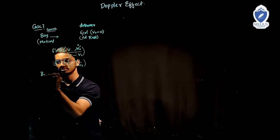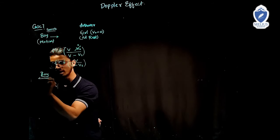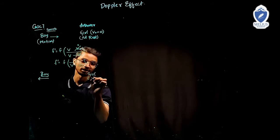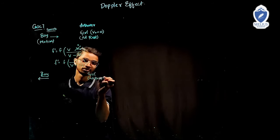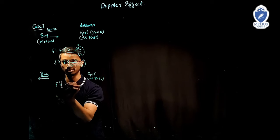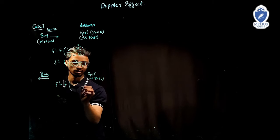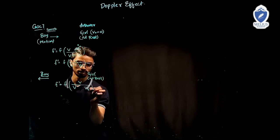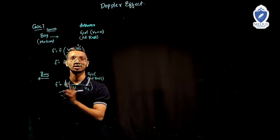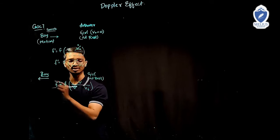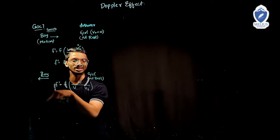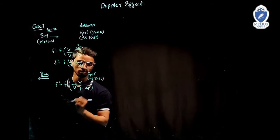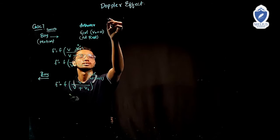Case 8 (last case): the boy (source) is moving away from the observer and the girl is at rest — velocity of observer is zero. The source moving away wants to decrease the frequency; to decrease, the denominator should be increased — plus V_S. Final formula: F' = F × V / (V + V_S).